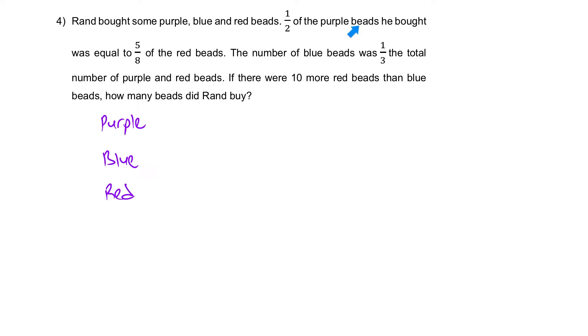First information, half of the purple beads. So we're going to draw one out of the two units. We're going to draw half. So we're going to draw two. Now let's focus on this. Half of the purple beads is equal to five units of the red. So the red beads is this.